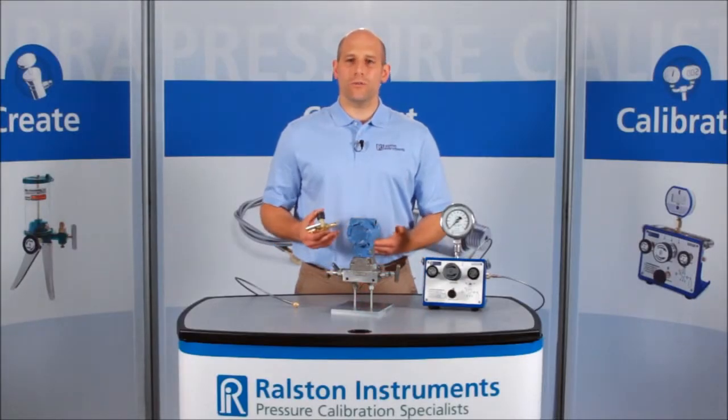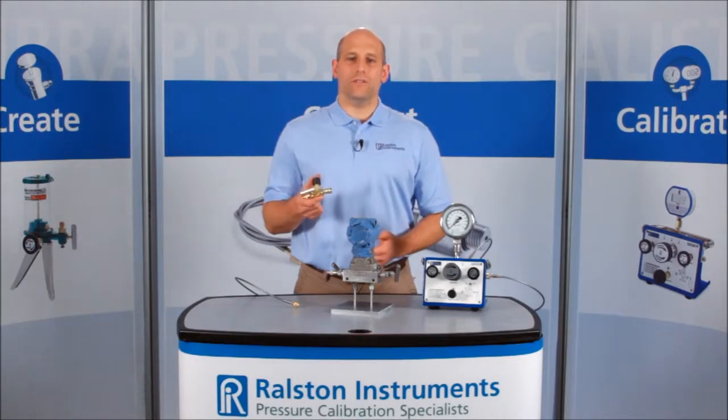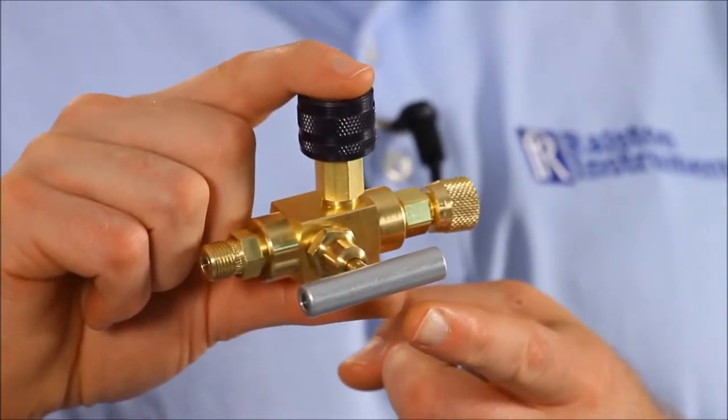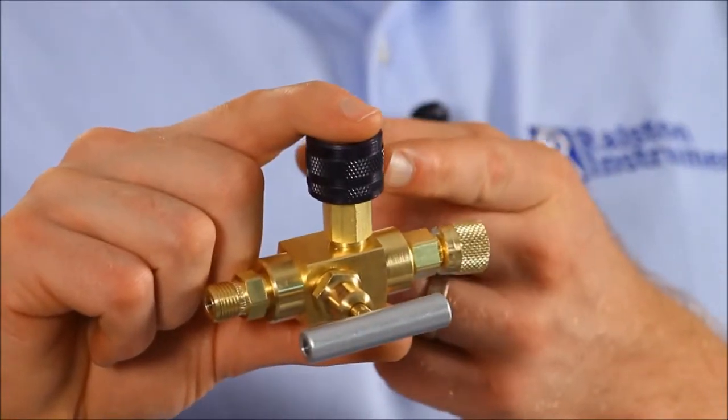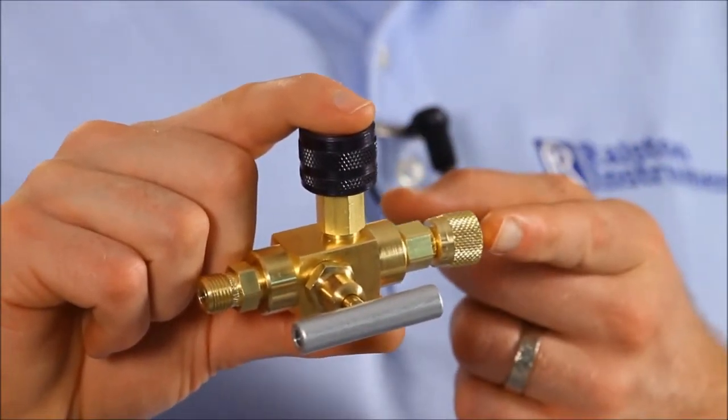I'm going to show you one of our Ralston QuickTest valves. This is the Ralston QuickTest block and bleed valve. It has an isolation valve on one end and a vent valve between the isolation valve and the outlet port.